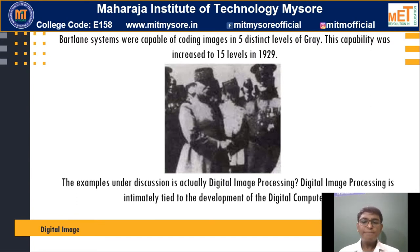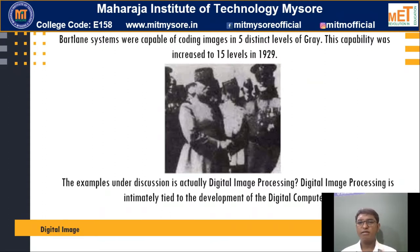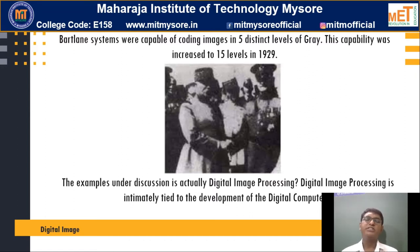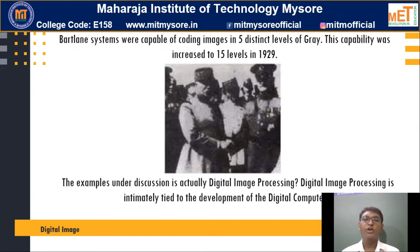This capability was increased to 15 levels in 1929, so we were able to increase the capability of gray levels. Does that mean we are doing image processing here? Might be. But our discussion of digital image processing is intimately tied to the development of digital computers. As digital computers kept on improving, digital image processing also went hand in hand with the growth of digital computers.